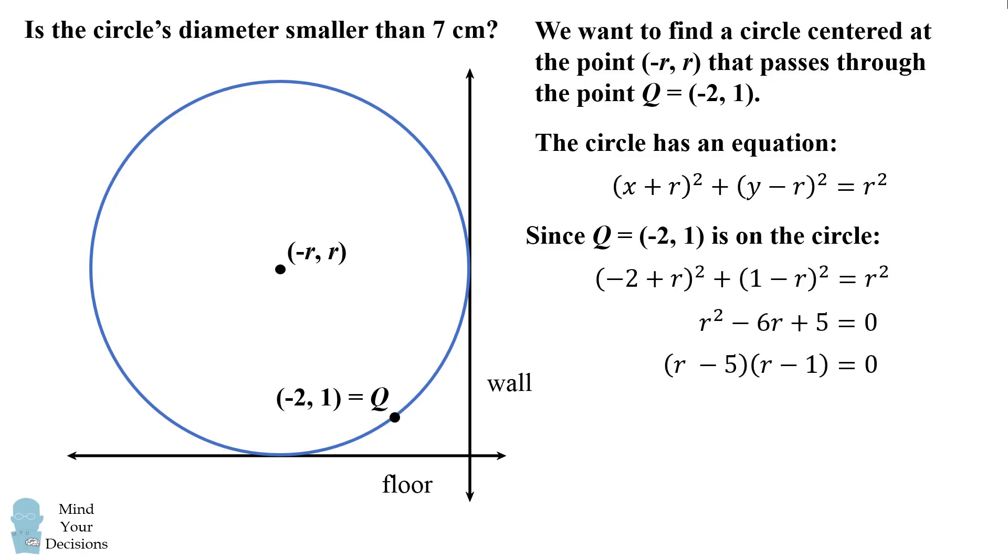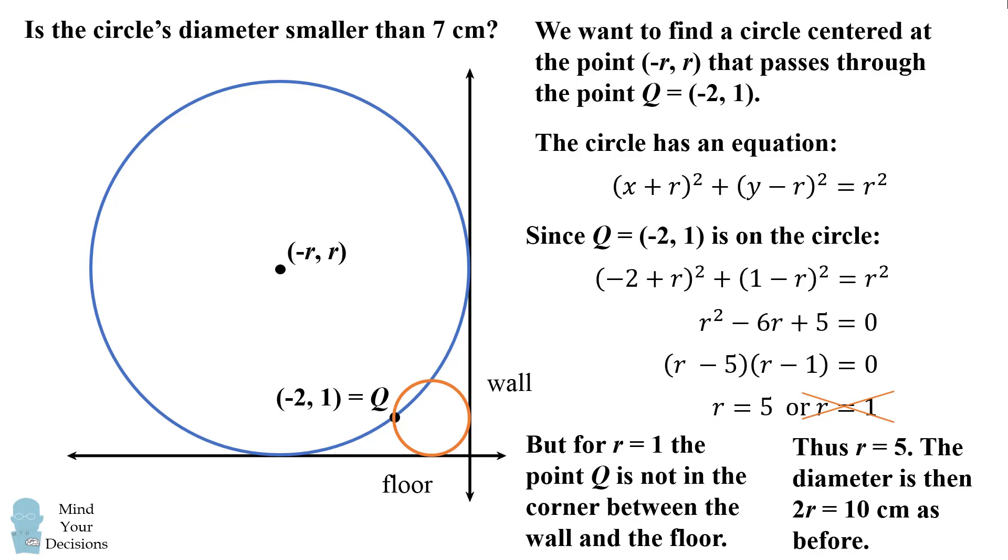This can be factored into (r - 5)(r - 1). We have two solutions: r = 5 or r = 1. Let's check the solution r = 1. In that case, the point q would not be in the corner between the wall and the floor. It would actually be on the other side of the circle. So this does not correspond to our original diagram and the problem that we're trying to solve. So we reject the solution r = 1. This means r is equal to 5 and the diameter of the circle is 2 times r, which equals 10 centimeters just as before.